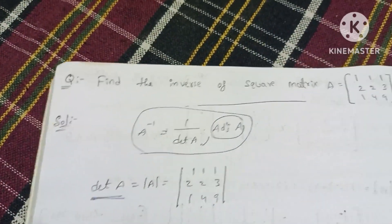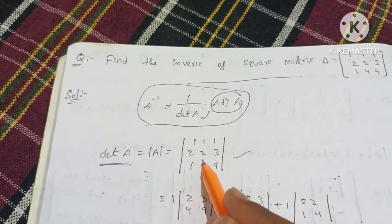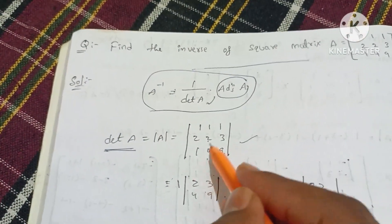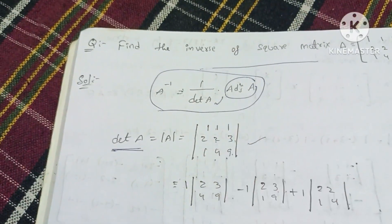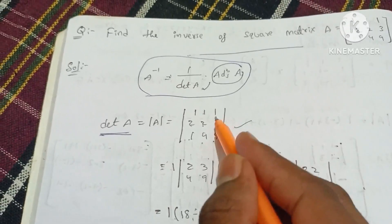First, the det A find out. The det A is equal to the original matrix. 1 into 2, 9, 18 minus 4, 3, 12, minus 1 into 2, 9, 18 minus 3, plus 1 into 2, 4, 8 minus 2.